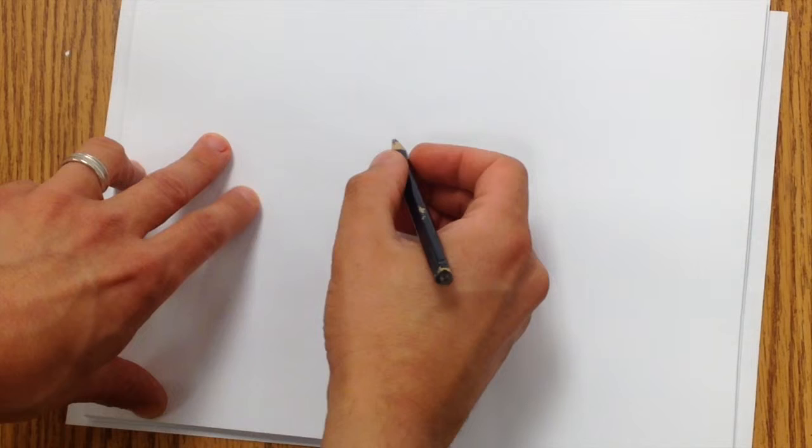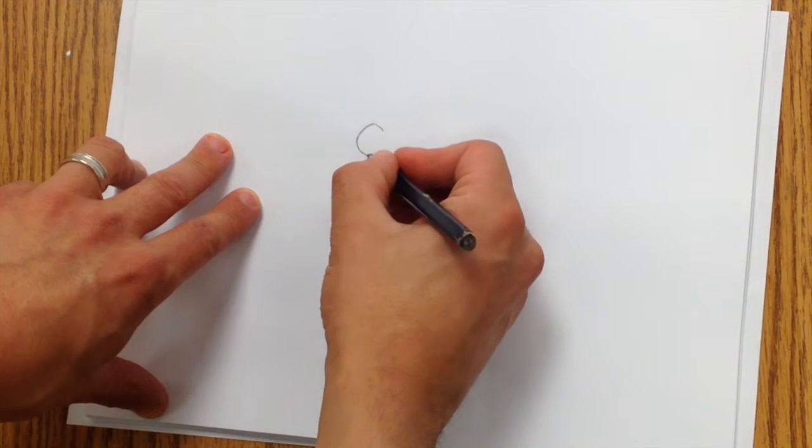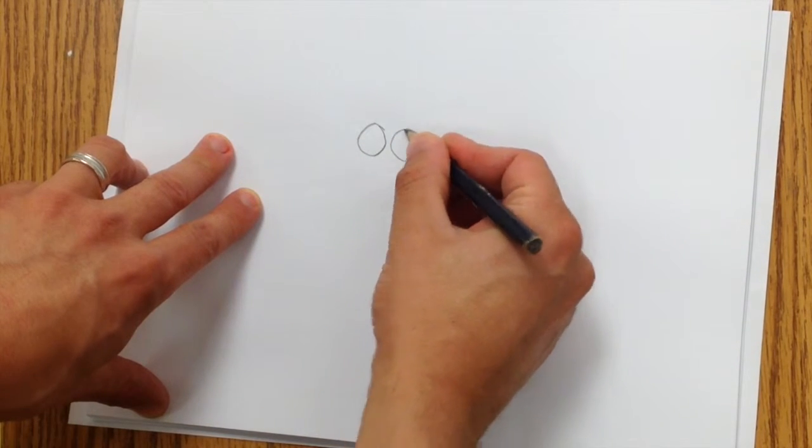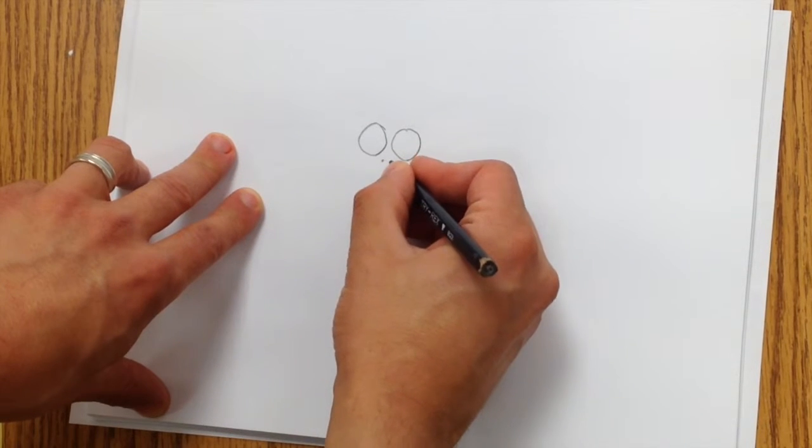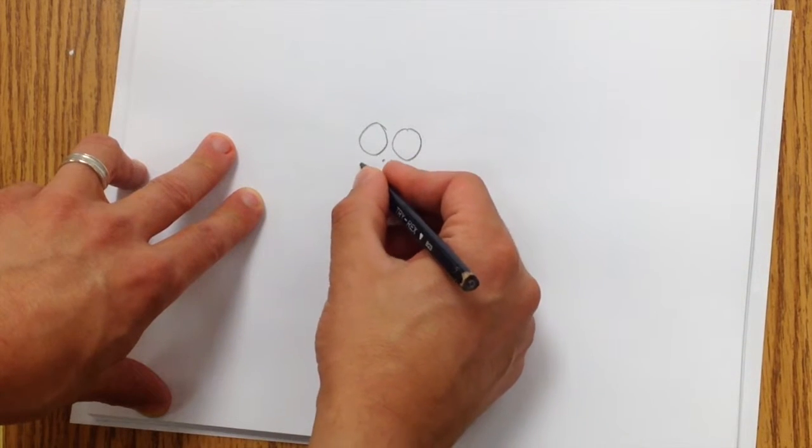So we're going to start by drawing his eyes, just two circles. And we're going to make two dots for his nostrils and a little smile.